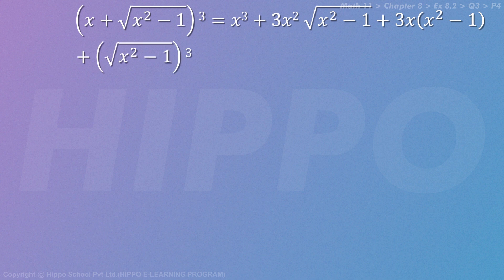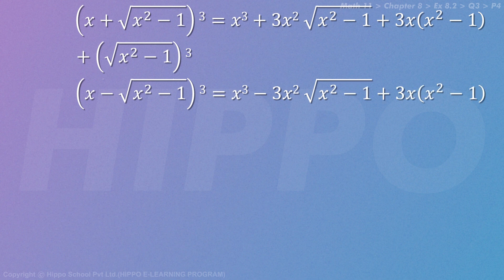(√(x² - 1))³. Now for (x - √(x² - 1))³, it will change: x³ - 3x² √(x² - 1) + 3x(x² - 1) - (√(x² - 1))³.